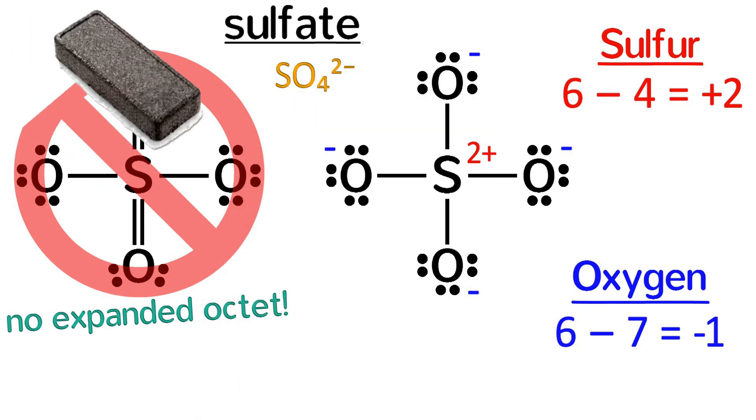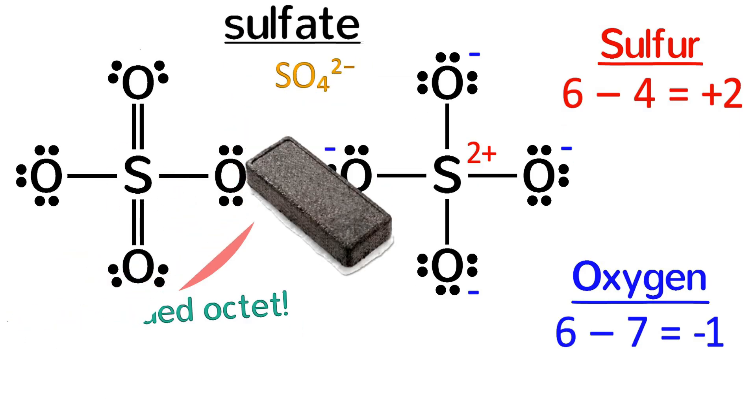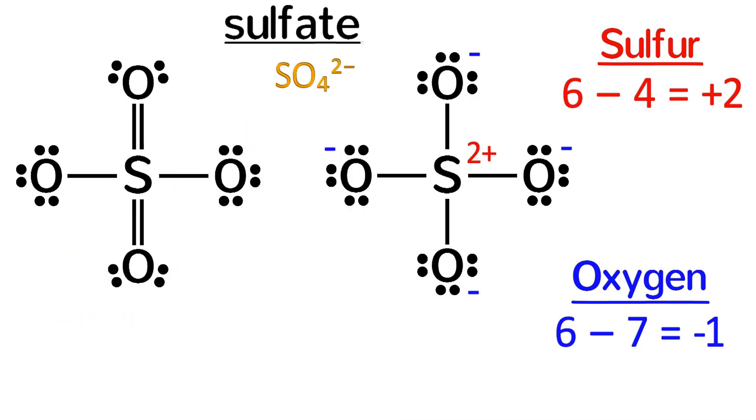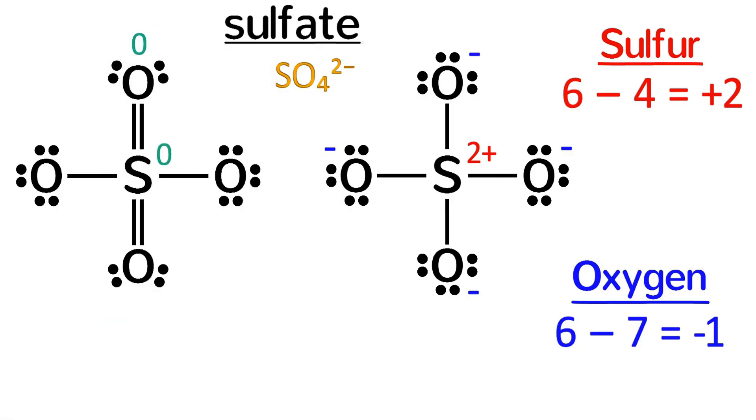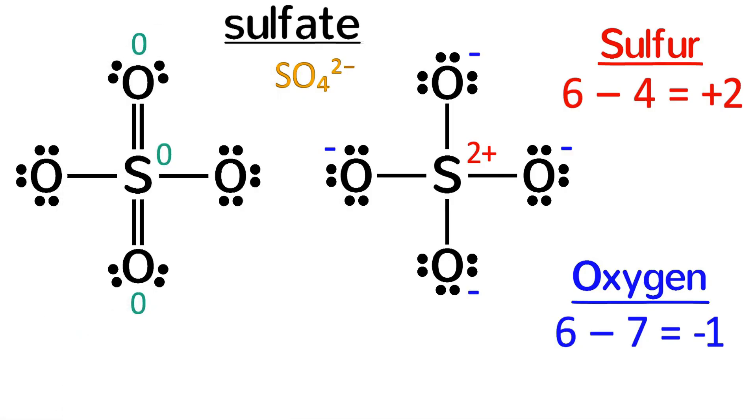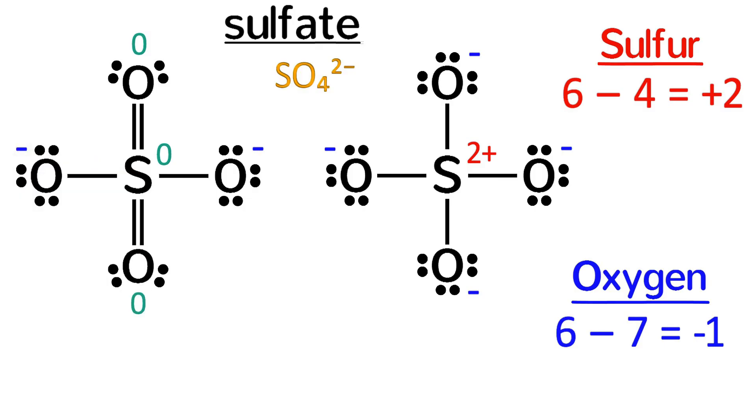Now, just for fun, let's consider the incorrect structure on the left. Pause the video and see if you can figure out the formal charges in it. Because of the double bonds, the sulfur and the top and bottom oxygens have formal charges of zero. The other oxygens still each have a negative one formal charge.